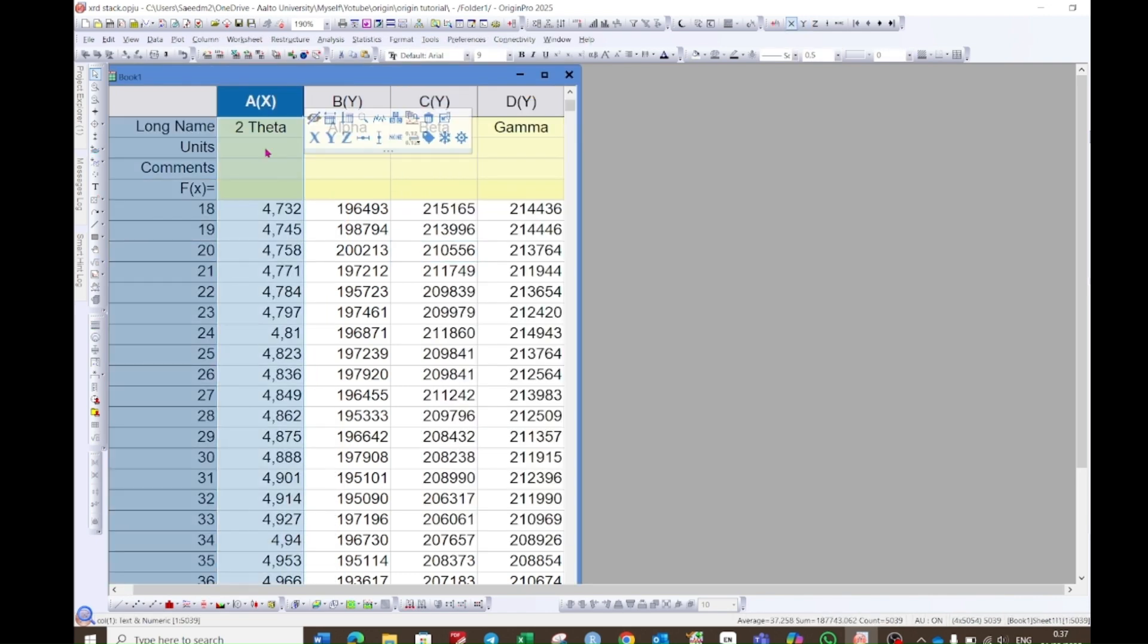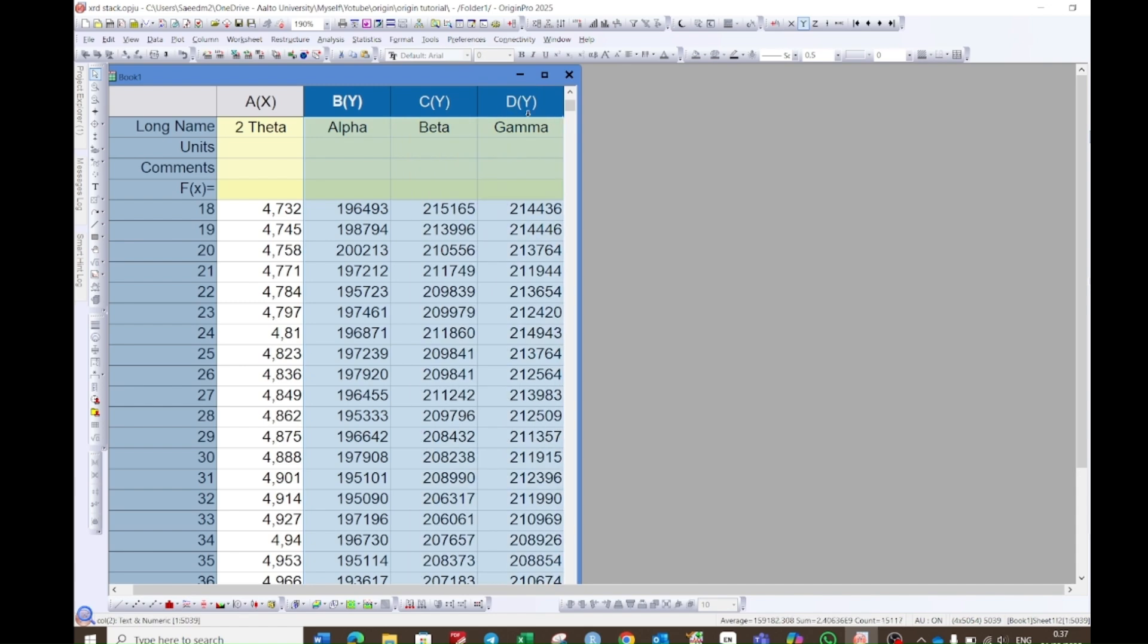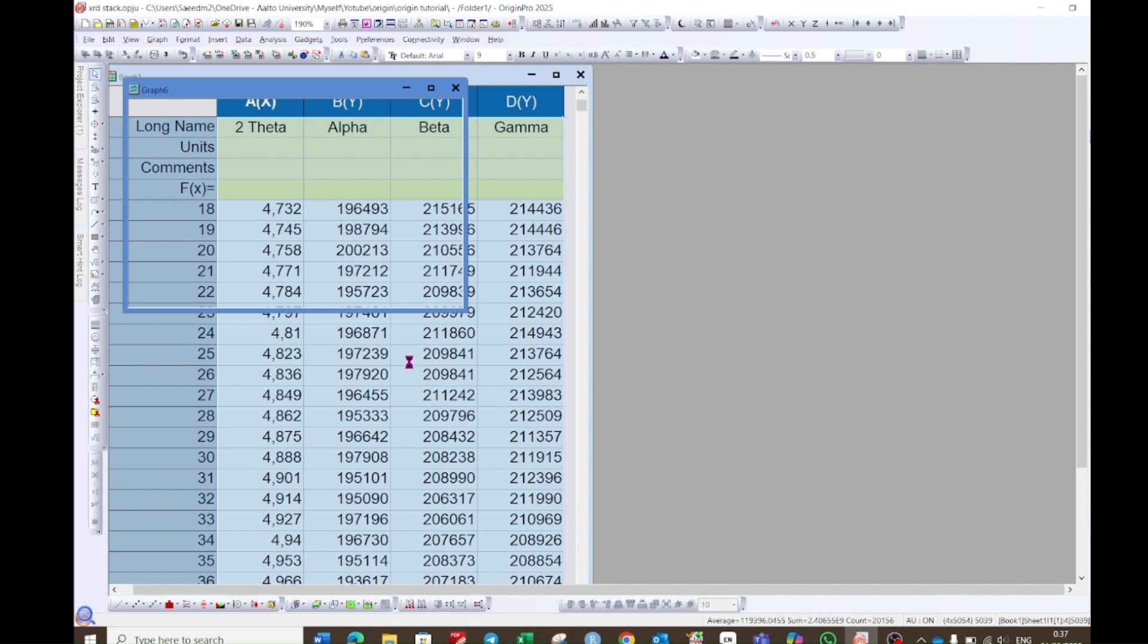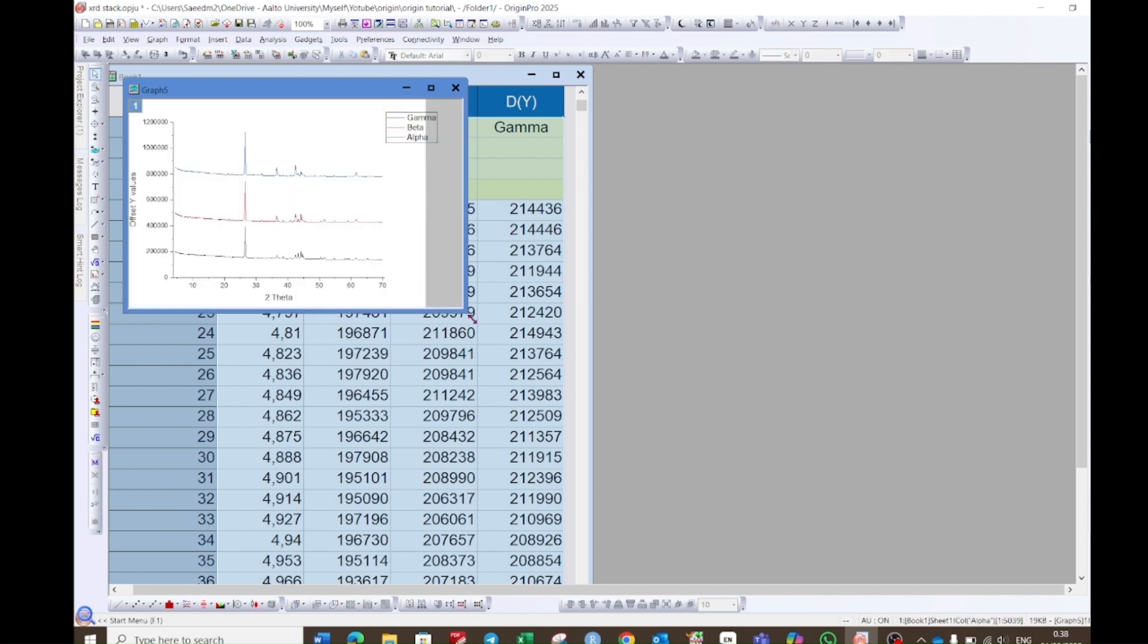Here I have the data for the XRD. The x-axis is the 2 theta and then I have three different samples. Select all of the columns, then go to this option which says stack lines by y offset. Choose this option which is stack lines by y offset. When you click on this, all of the graphs will be stacked by a single y-axis.